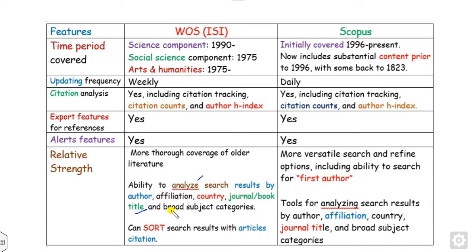On the other hand, Scopus has the availability to check author's research based on first author name, second author name and so on. You have tools to analyze journal title, broad sense and categories. These are the basic feature differences between Scopus and Web of Science.